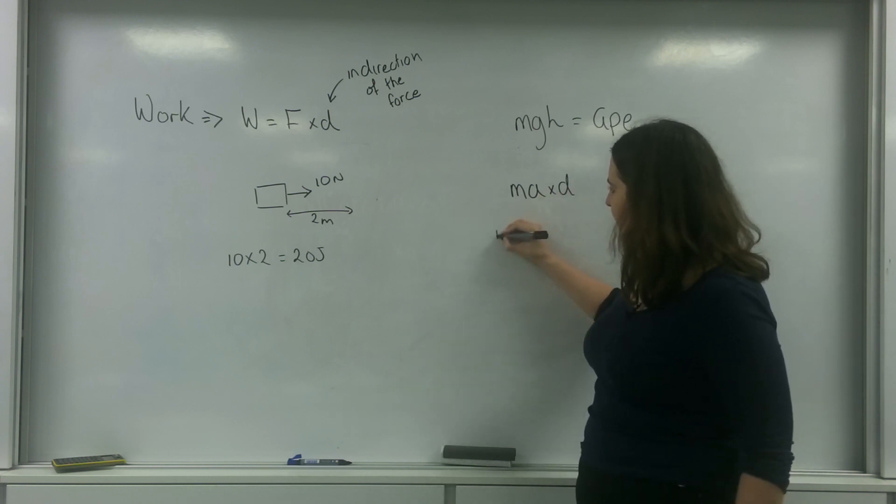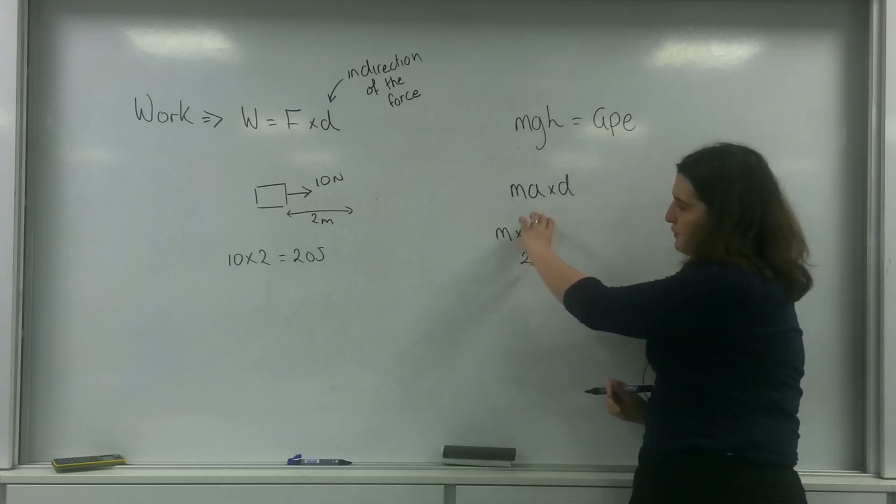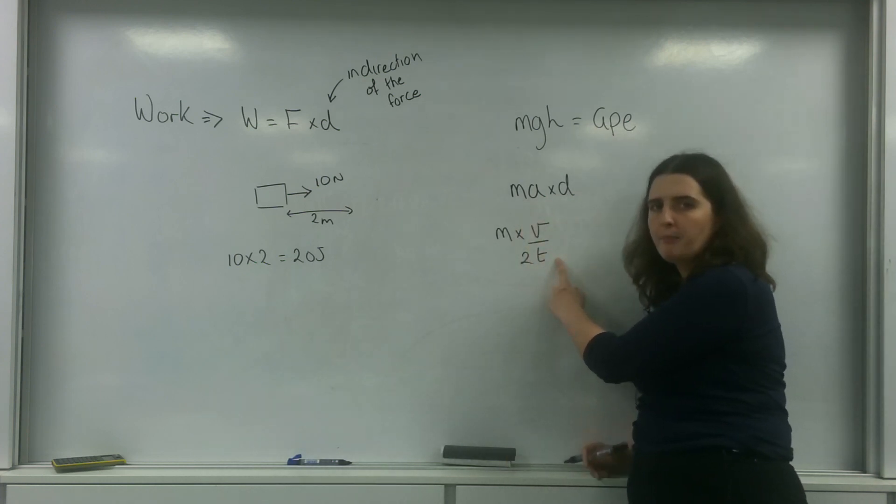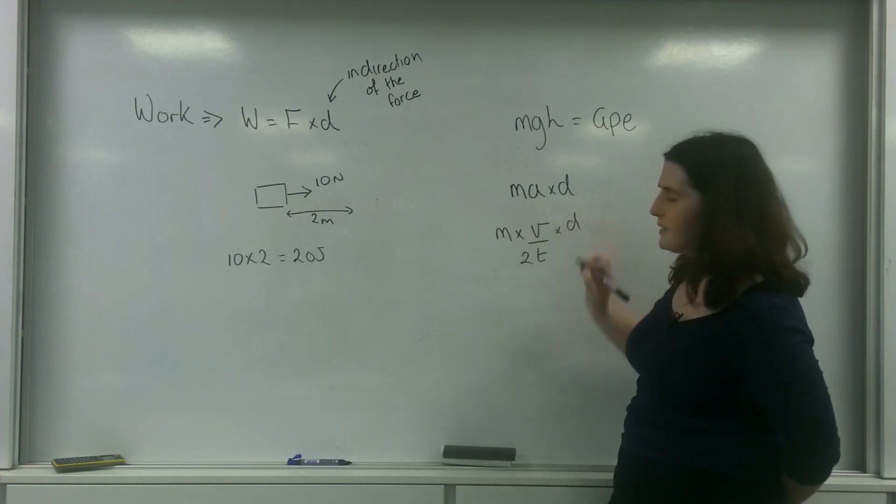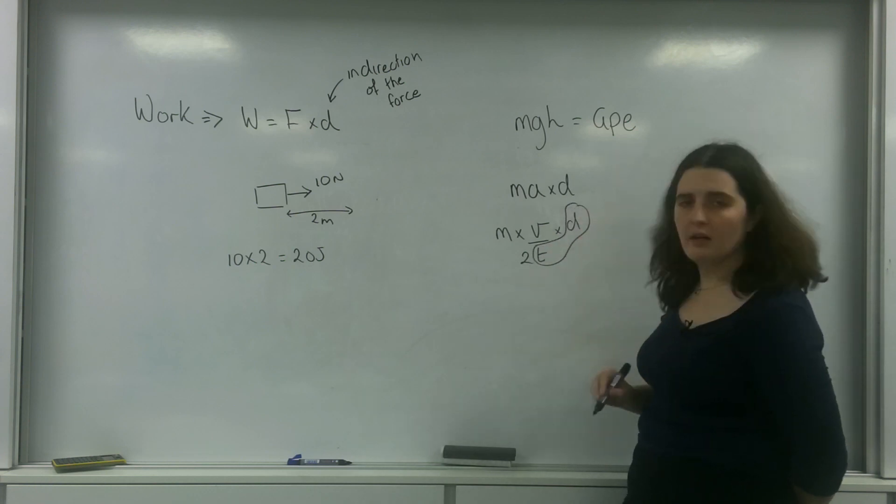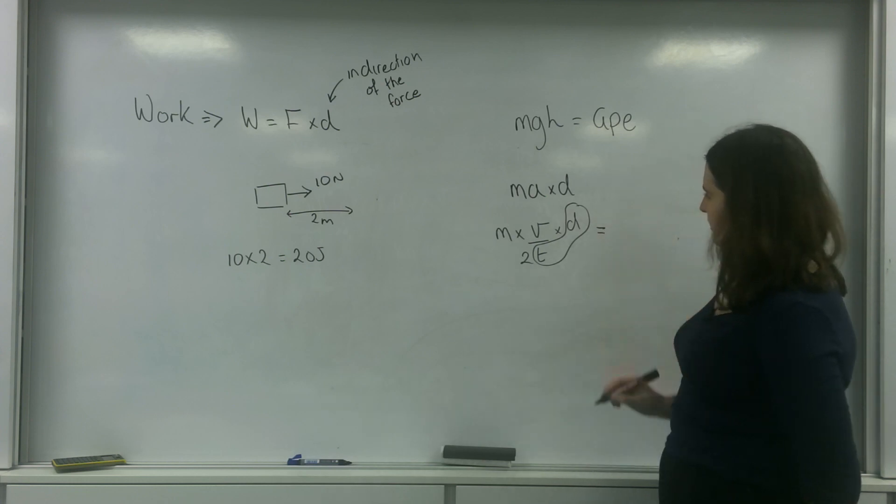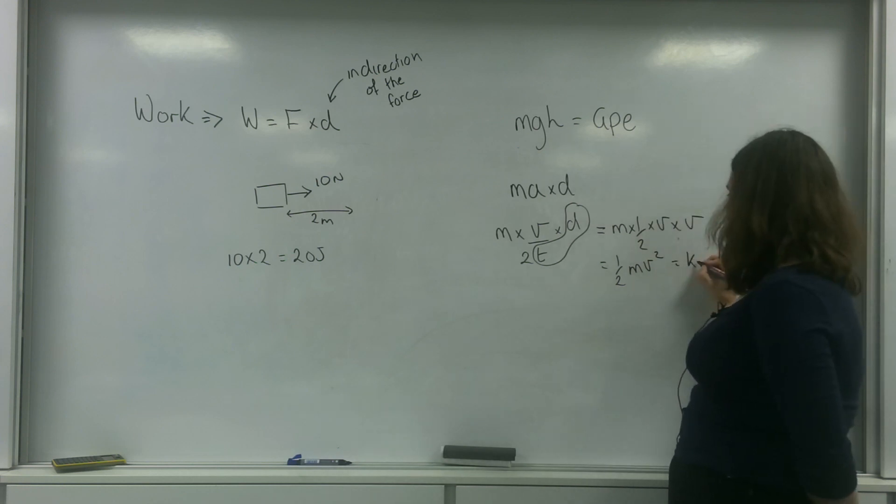So that is going to be m times v over 2t. So it's the average velocity divided by the time, which is the acceleration, that would be acceleration, times by distance. And of course this here, distance divided by time, is another velocity. So I end up with m times a half times v times v. And I end up with a half mv squared, which is also known as kinetic energy.